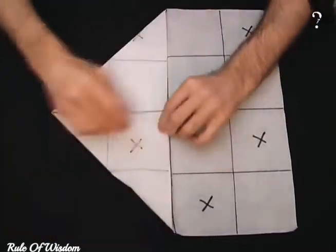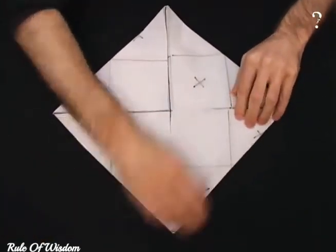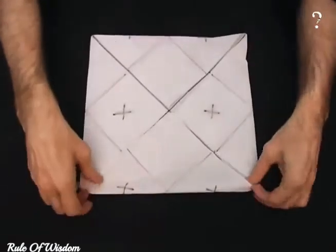To win the bet, fold the 4 corners to the centre like this. Rotate the paper around and fold the top half over the bottom.